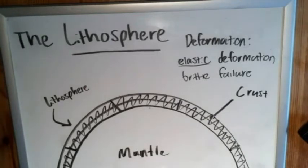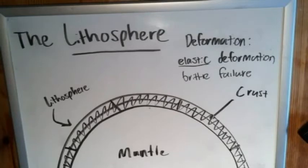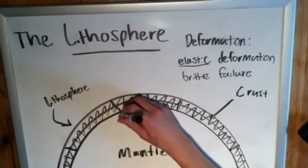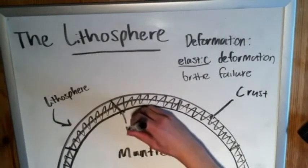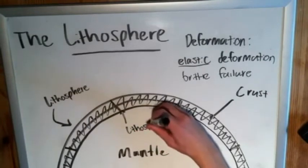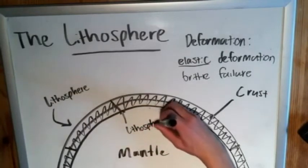The next layer we'll talk about is the asthenosphere. The boundary between these two is called the lithosphere-asthenosphere boundary, very appropriately named. That is the lower boundary of the lithosphere, while the upper boundary is, of course, the surface of the Earth.